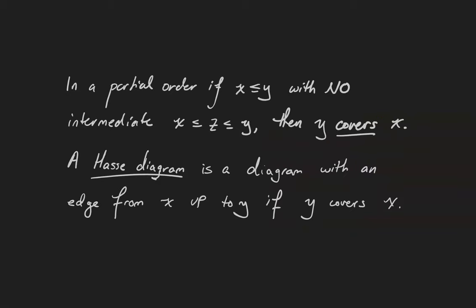Partial orders come equipped with some pretty nice visualizations. In a partial order, if x is less than or equal to y, and when I say less than or equal to I'm talking about the partial order, not necessarily the usual meaning of less than or equal to.